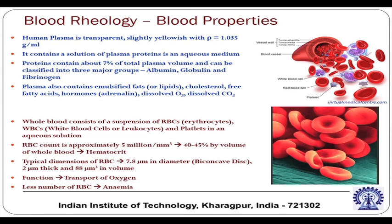Human plasma is transparent — the watery part of the blood — slightly yellowish with a typical density of about 1035 kg per meter cube, similar to water density. It contains a solution of plasma proteins in an aqueous medium. Proteins comprise about 7 percent of the total plasma volume and can be classified into three major groups: albumin, globulin, and fibrinogen. Plasma also contains emulsified fats or lipids, cholesterol, free fatty acids, hormones, dissolved oxygen, and dissolved carbon dioxide.